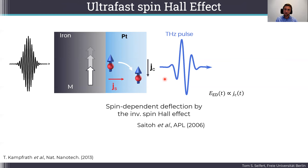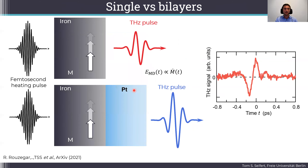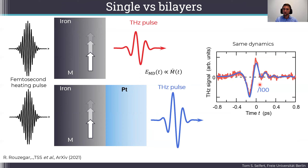Let's compare the single iron film to the bilayer made out of iron and platinum. From the single iron film we had the magnetic dipole radiation. From the bilayer with the very same femtosecond laser pulse heating, we find very similar dynamics for the electric dipole radiation. That's a surprise. What is also surprising is the orders of magnitude difference: the electric dipole radiation is about 100 times stronger than the magnetic dipole radiation.